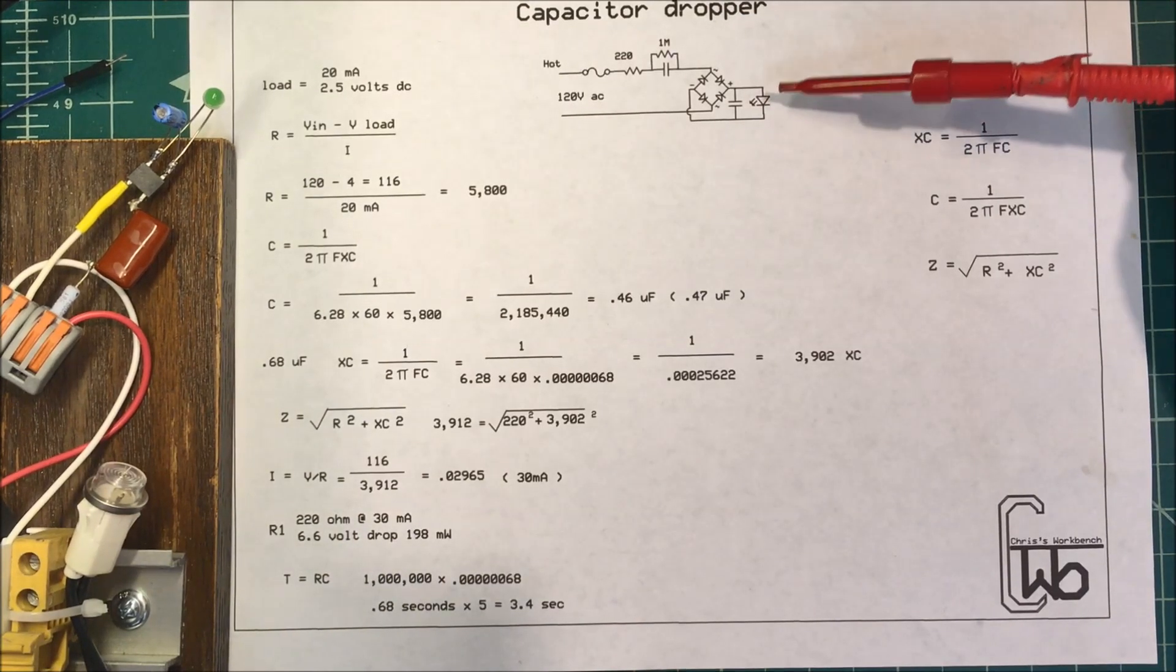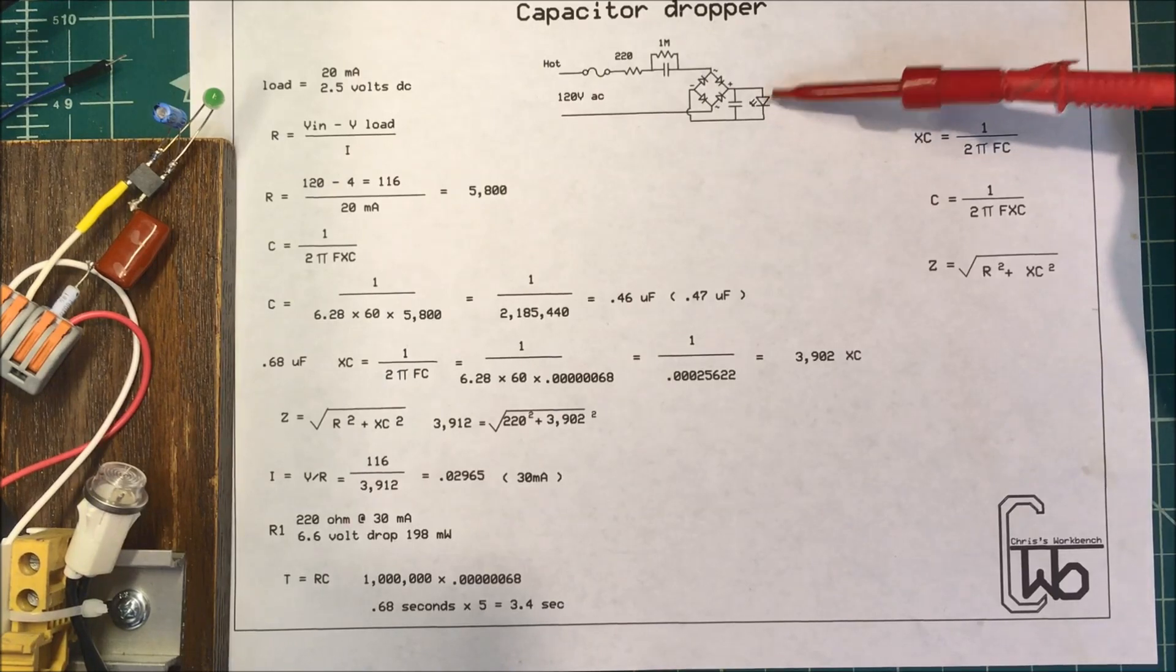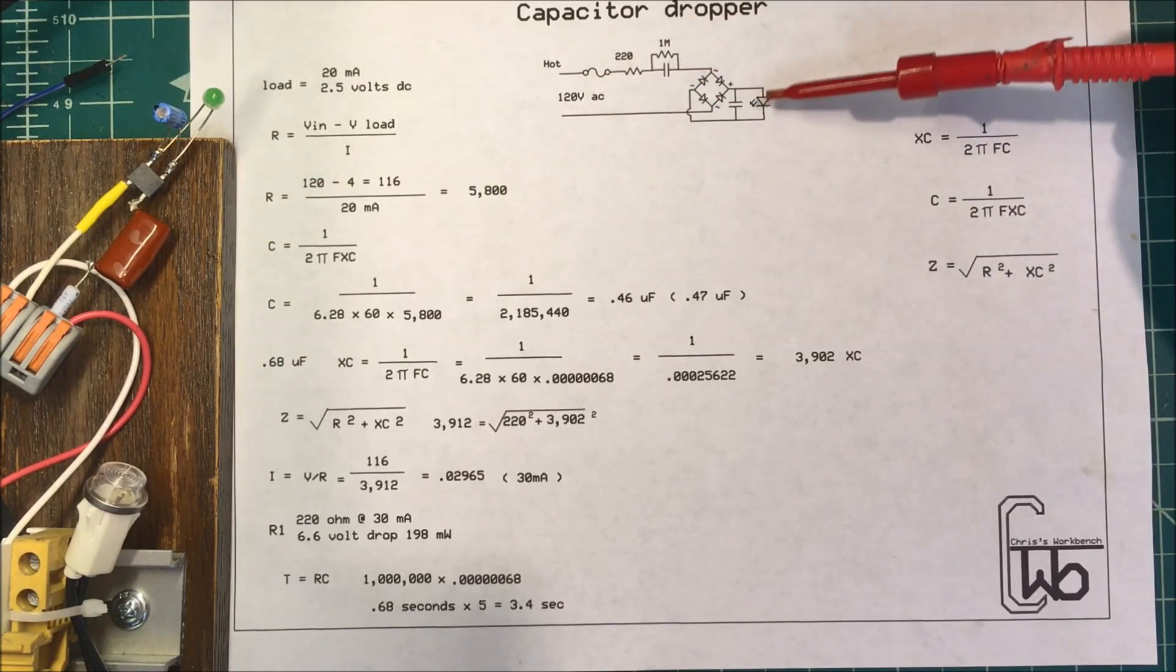Let's talk about a capacitor dropper. I want to light an LED with 120 volts AC and use it for a pilot light.